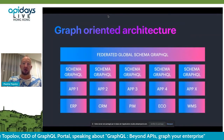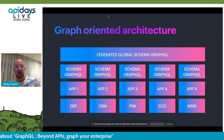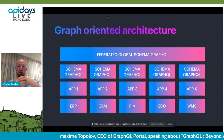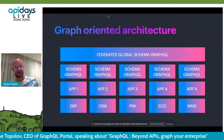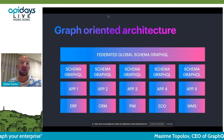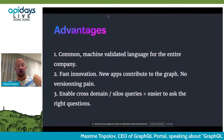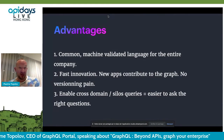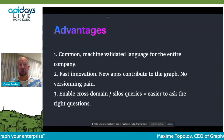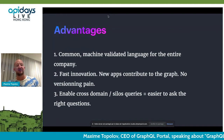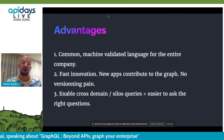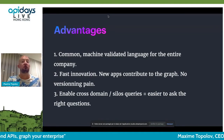Once you introduce GraphQL, you create a graph-oriented architecture. You create a centralized, federated global GraphQL schema for your company — all types and queries stitched together to create a global overview of your company's business objects. This is the responsibility of your graph governance team. What you get is a common, machine-validated language for the entire company — your ubiquitous language. You get faster innovation as new apps contribute to the graph, no versioning pain, and most importantly, you enable cross-domain silo queries. You can more easily ask the right questions — this is how you enable innovation using GraphQL.